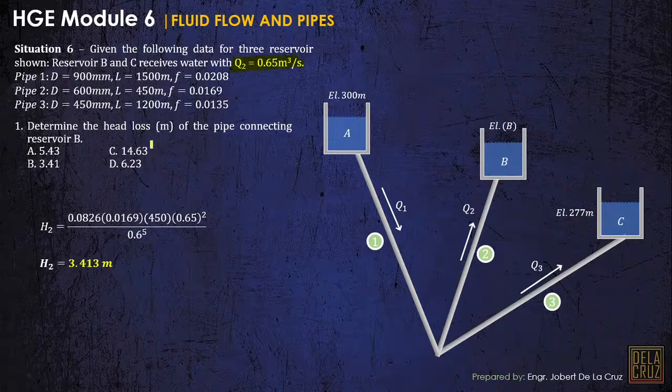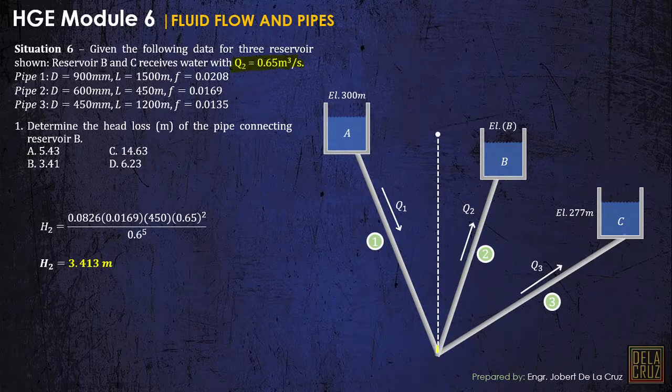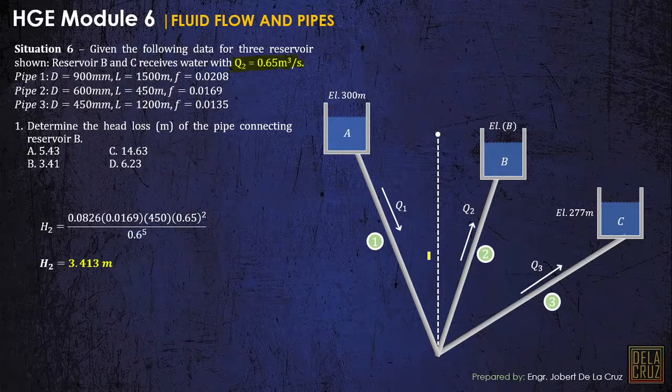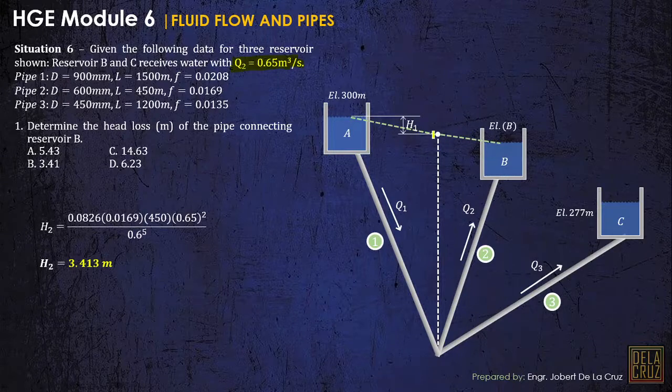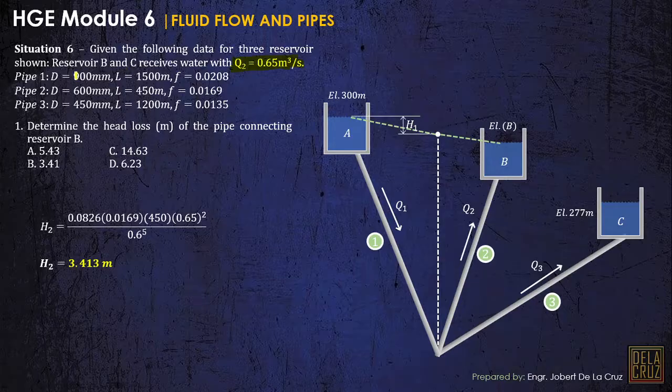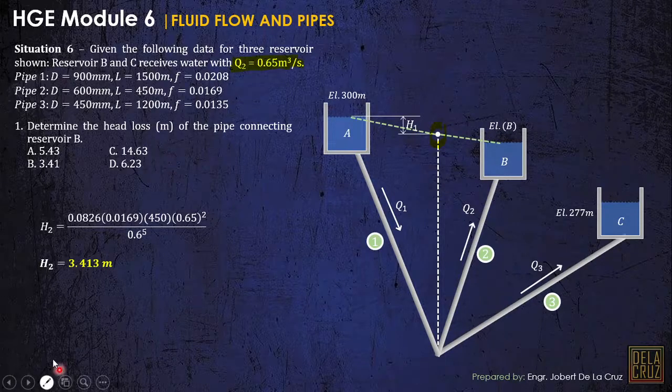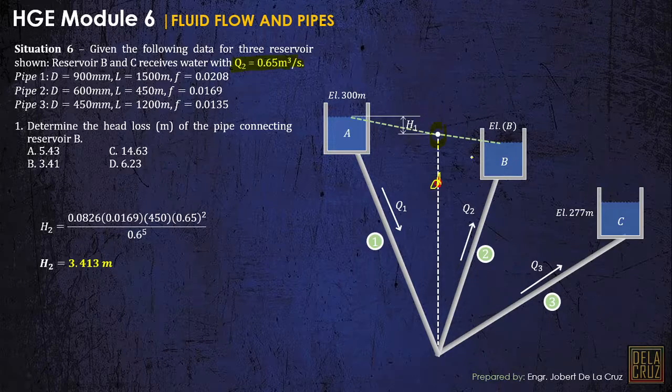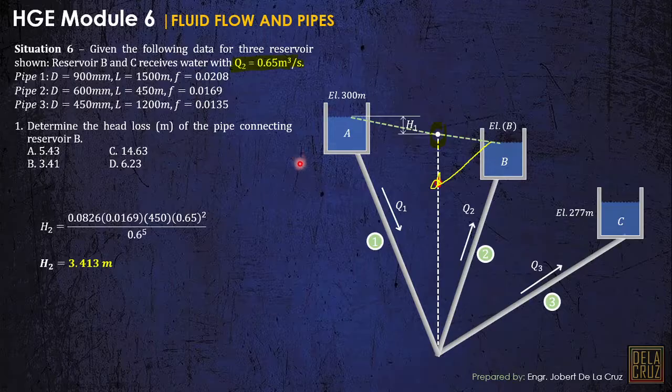So what is the importance of this statement? So in that case, we'll be assured that the energy at junction should be above the elevation of B. Because it will signify that it receives water from A. So if this is the head loss for pipe 1, this should be the energy grade line from the junction through B. Because if reservoir B supplies water through C, then it should supply to the junction, this point here should be lower. So that will be the significance of this statement, reservoir B and C. I hope that is clear.